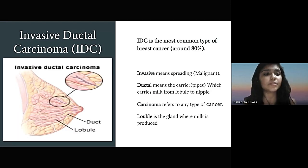In this project we deal with the IDC that is invasive ductal carcinoma. IDC is the most common type of breast cancer. Invasive means spreading. Ductal means the carrier or pipe which carries milk from the lobule to nipple. Carcinoma refers to the type of cancer and lobule is the gland where the milk is produced. And in this picture you can see a detailed diagram of all these things.